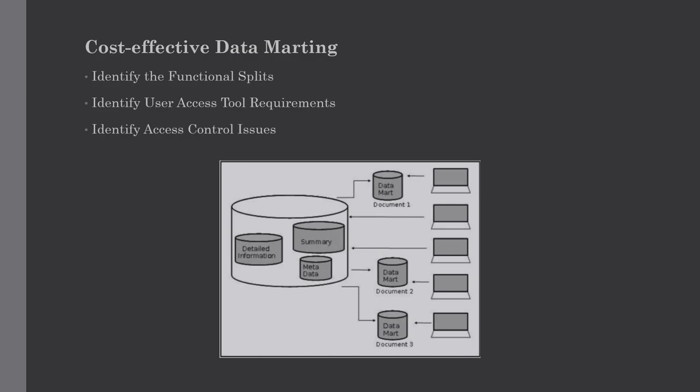Let's discuss this with a simple example. This diagram shows data marting for different users. Take a financial data warehouse containing all financial data. We can split the data on the basis of assets and liabilities, and also accounts payable and accounts receivable. Accounts payable contains data for transactions the company must pay for their debt, which falls under liabilities. Accounts receivable contains data for amounts the company is owed by vendors. This data is consumed by business analysts for creating the company's balance sheet, splitting data according to each entity.